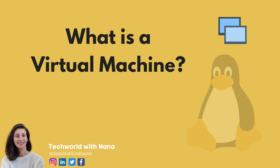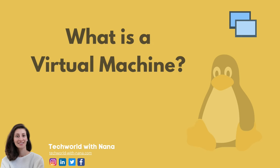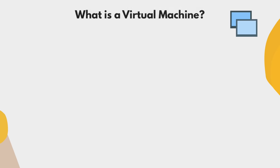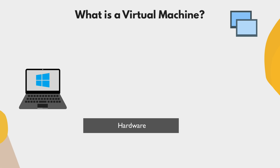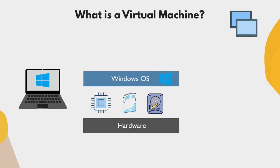Now let's see what a virtual machine is. Imagine you have a Windows computer — a computer has hardware like CPU, RAM, and storage. On top of that you'd have a Windows operating system that controls how applications use these hardware resources, and on top of the Windows operating system you would have applications that talk to Windows.